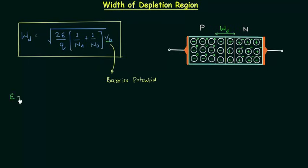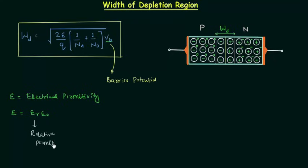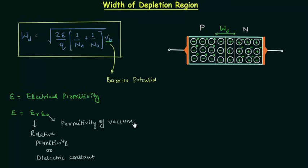Epsilon is electrical permittivity, and it is equal to epsilon_r times epsilon_0. Epsilon_r is the relative permittivity, also called the dielectric constant. Epsilon_0 is the permittivity of free space or vacuum. For silicon, the permittivity is equal to 1.04 × 10^-12 Farad per centimeter.